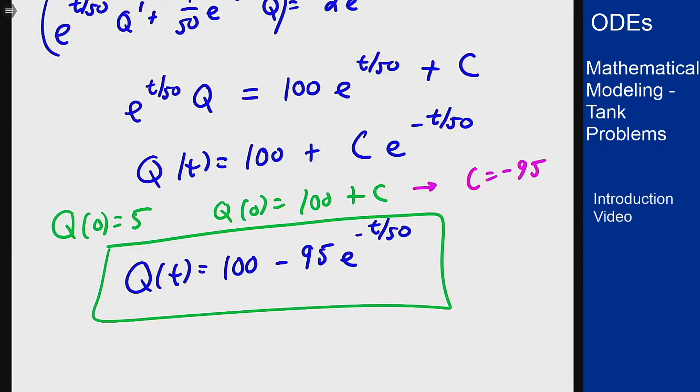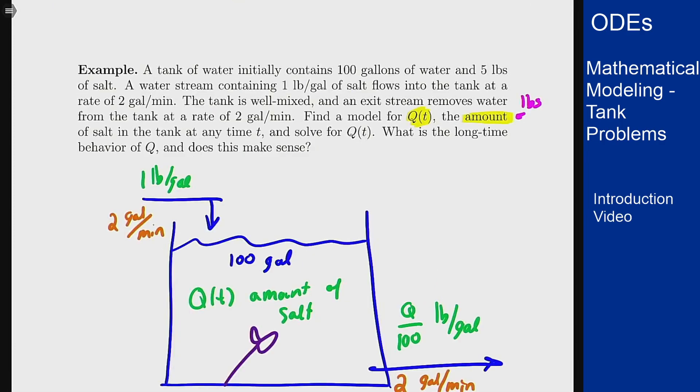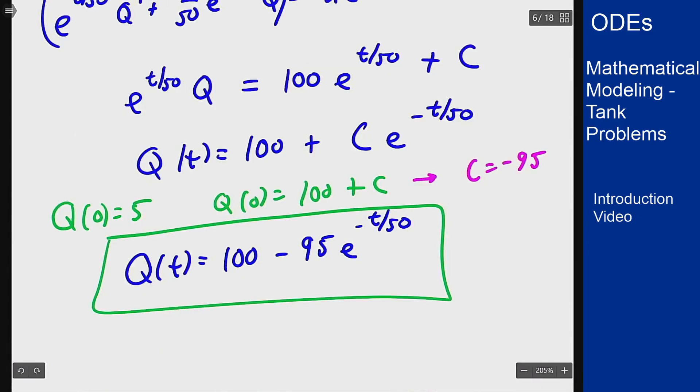Now what does this tell me? Let's go back to the question. The question asks for the long-time behavior of Q and does this make sense? I go to my solution. We see that as t gets really big this here is going to go away. It's going to be e^(-t/50). That's going to vanish because this is going to go to 0 because that's what happens when t gets big. So the end result here is 100. Does a long-time behavior of 100 make sense?